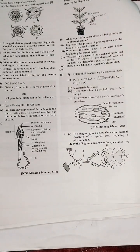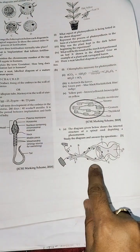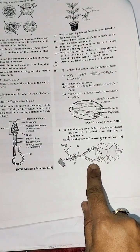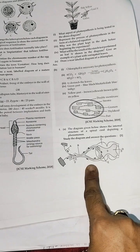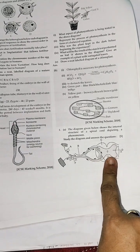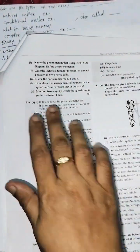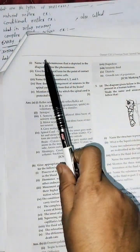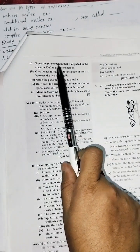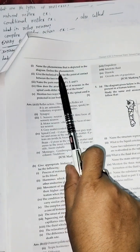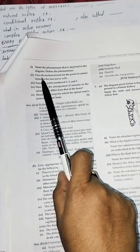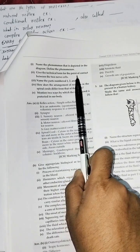We will check the previous year question papers. In one paper, they give a diagram showing the internal structure of the spinal cord depicting a particular phenomenon. Students must study the diagram and answer the questions. The questions asked include: name the phenomenon depicted in the diagram, and define the phenomenon — which is the reflex arc.